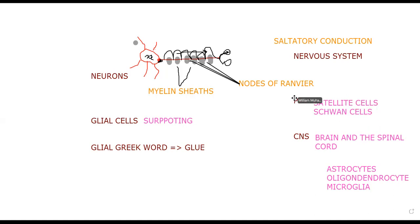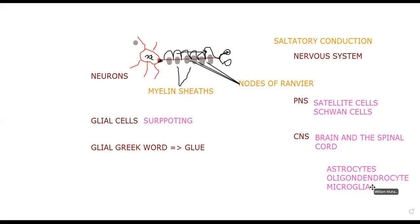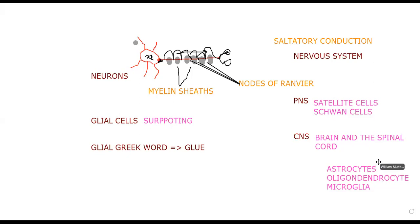Satellite cells provide nutrients to neurons in the peripheral nervous system — the same function that astrocytes have in the central nervous system. Astrocytes are also part of the blood-brain barrier (BBB), meaning they do not allow certain substances to cross into the brain.